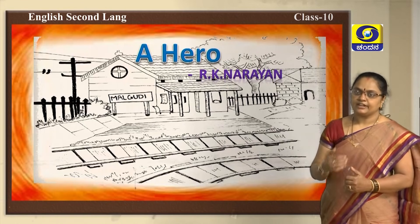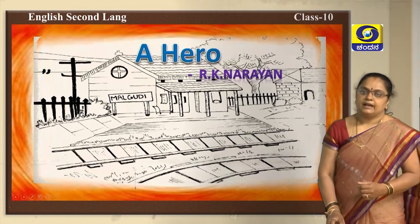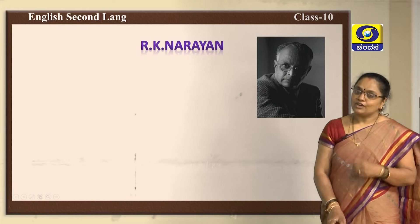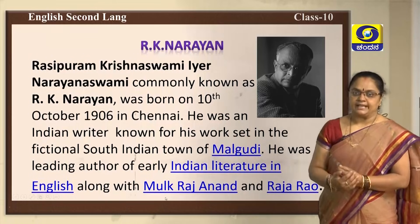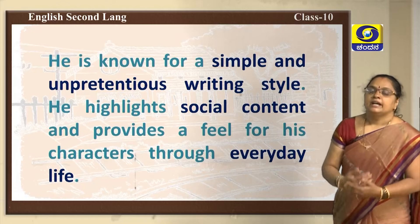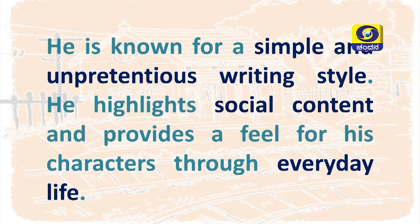Before reading the lesson, let us know something about the author R.K. Narayan. R.K. Narayan's full name is Rasipuram Krishna Swami Iyer Narayana Swami, but he is popularly known as R.K. Narayan. He was born on 10th October 1906 in Chennai. He was an Indian writer known for his work set in the fictional South Indian town of Malgudi. He was a leading author of early Indian literature in English, along with Mulkraj Anand and Raja Rao. R.K. Narayan is known for a simple and unpretentious writing style, highlighting social content and providing a feel for his characters through everyday life.